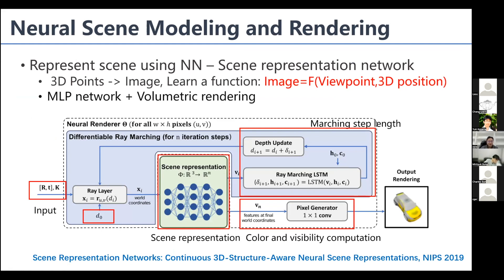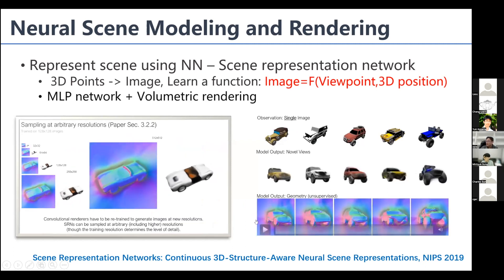After the DeepMind paper, there has been a lot of research on neural rendering. Here's another paper — the Scene Representing Network from NIPS 2019 — which develops a neural network to learn a function. Given viewpoints and 3D positions, it can render an image. This paper may be the first to use an MLP network to predict the color of a 3D point along a ray. Given the viewpoint, rotation, translation, and projection matrix, we can unproject rays for each pixel, then use the MLP to obtain features and convert them into colors.